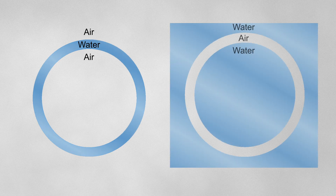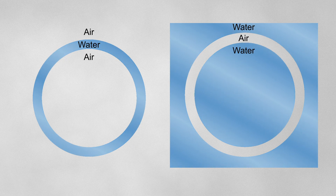A regular bubble can be described as a liquid shell that has gas on the inside and outside of it. And so an anti-bubble is a gas shell with liquid on the inside and outside of it. Now this is different from an air bubble underwater, because there's no thin layer of air to make a shell — that's essentially just a pocket of air underwater.